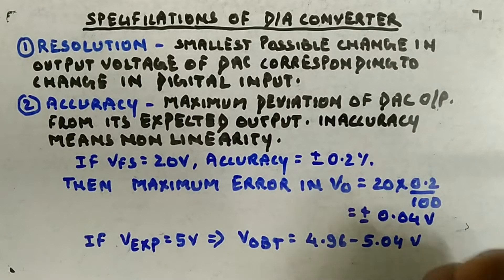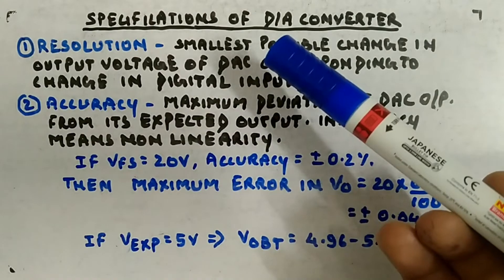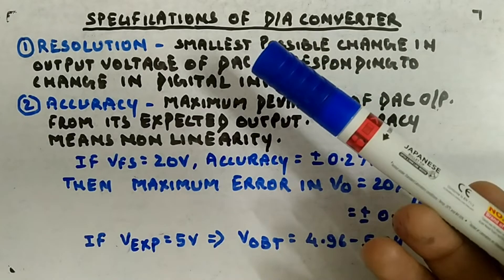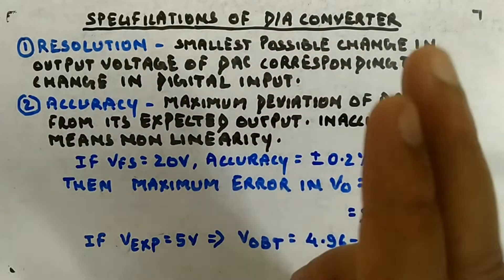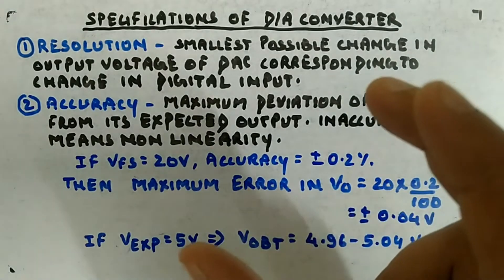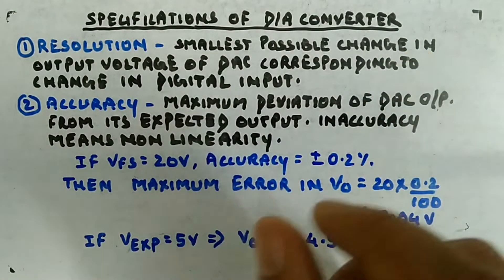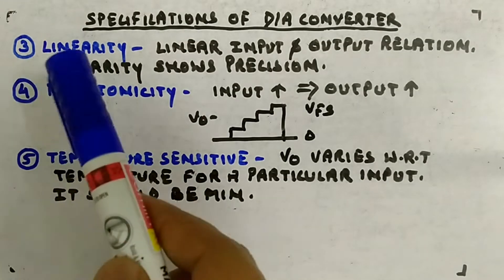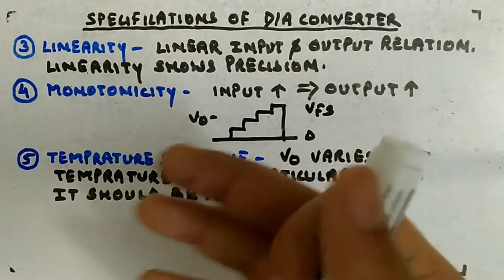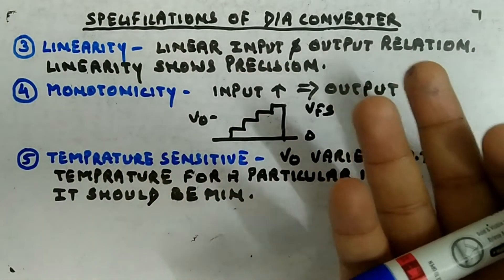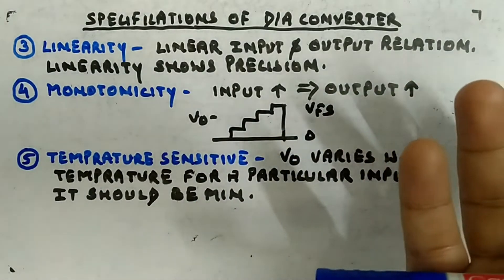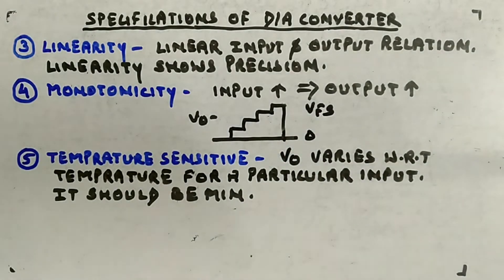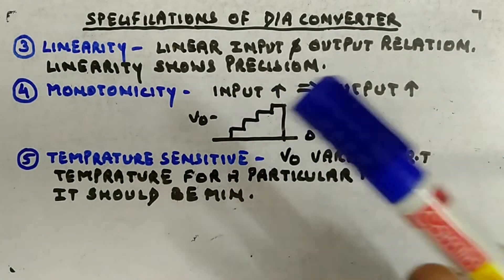As you increase the number of bits, the number of steps increases and the resolution decreases, because you are accommodating more and more steps between zero and the full-scale voltage, so the step size is decreasing. Next comes linearity. Linearity means a linear input-output relation — as you increase or decrease the input, your output should also follow proportionally.